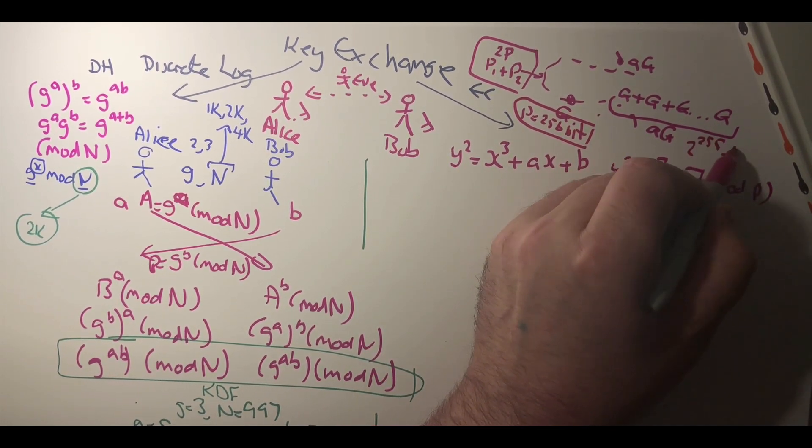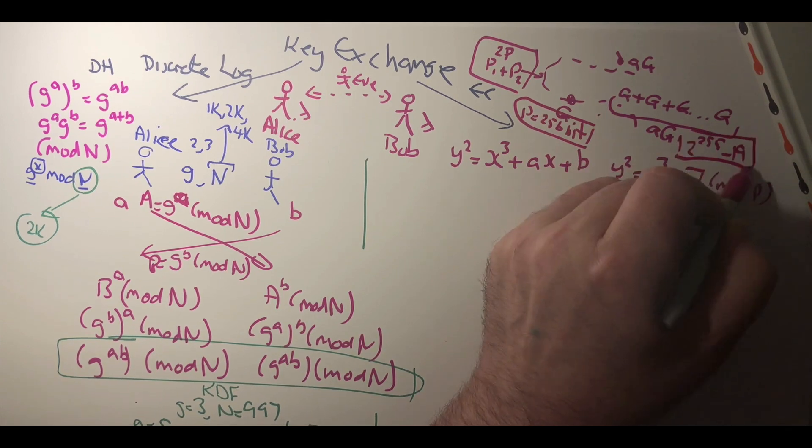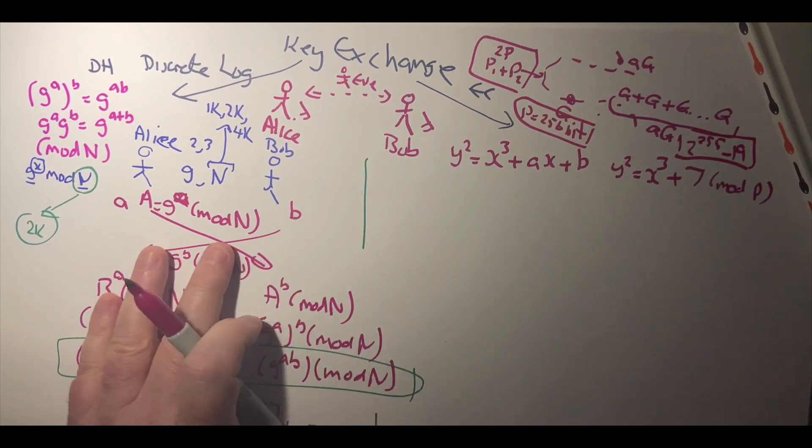Typically a 256 bit prime number is used. In one case, that is 2 to the power of 255 minus 19, which is used in curve 25519.